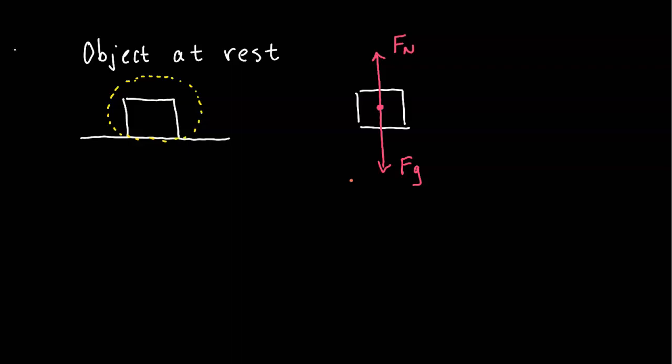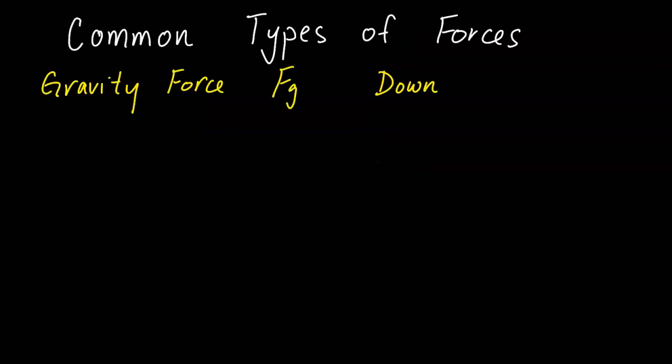Next I want to go through the common types of forces you would see when drawing free body diagrams. The first common type of force is gravity force, symbol Fg, and it's going to be pointed down. I would suggest drawing this first on every free body diagram because you're always going to have gravity force if the object is on Earth.